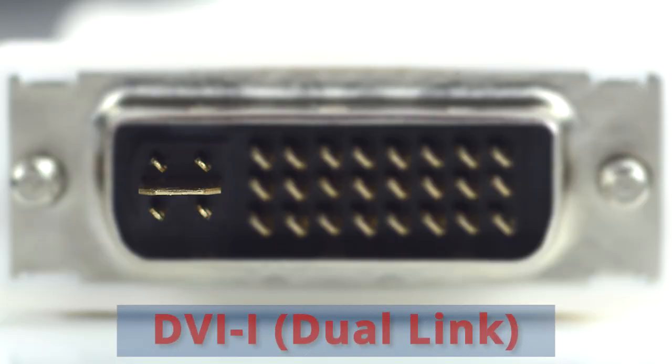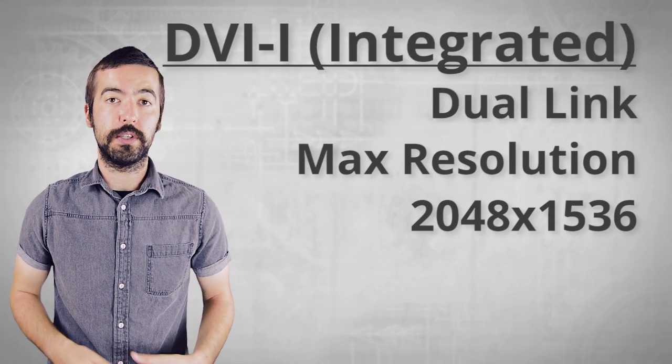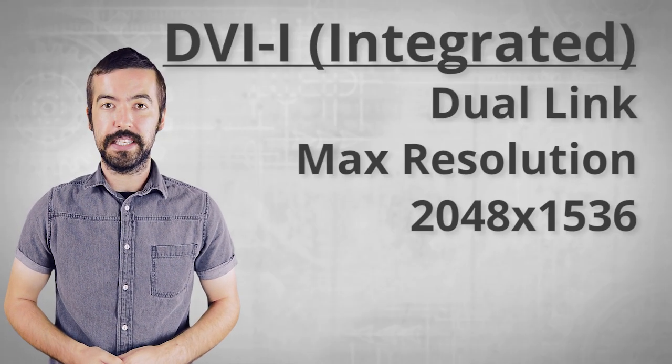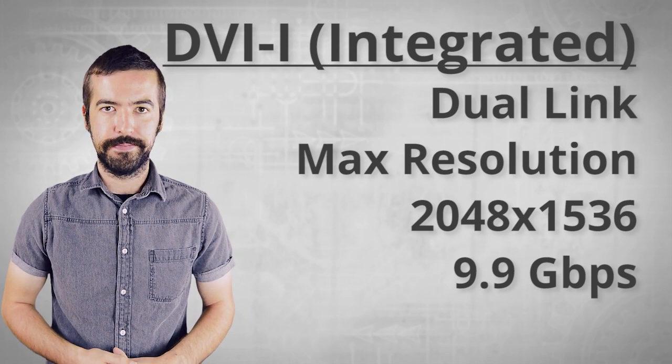DVI-I Dual Link uses a pin arrangement of a single flat pin surrounded by four pins and three solid rows of eight pins each. It is capable of resolution up to 2048x1536 at 9.9 Gbps.